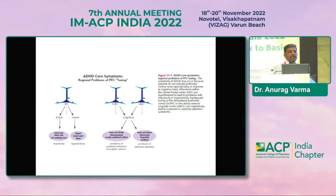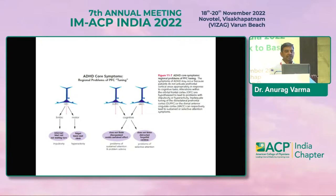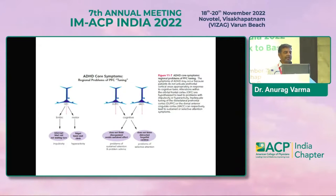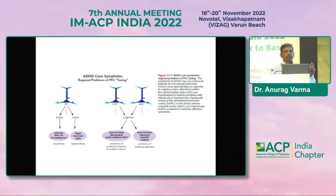ADHD is a condition which has comorbid other psychiatric illnesses — a lot of them. A lot of times clinicians say we thought this was ADHD, but now the presentation is more of anxiety and depression. What you have to understand is that ADHD by nature has a lot of variants. You might have symptoms of anxiety and depression, you might have symptoms of ADHD, and in adults they usually mix up. For proper management, you have to look at both the symptoms and most of the times treat them simultaneously.